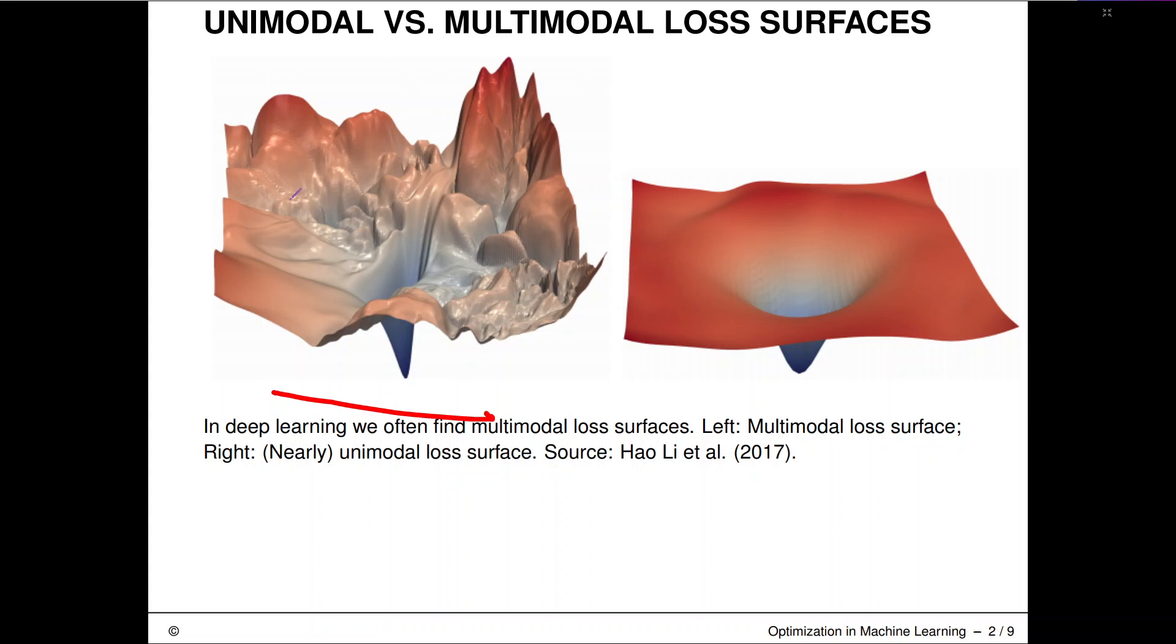A visualization like this on the left hand side might indicate that there could be a global minimum which is much better than a local one. In general, this could be true for arbitrary functions we might optimize. Whether that is a realistic scenario and really the problem in deep learning we'll discuss at the end of this section.